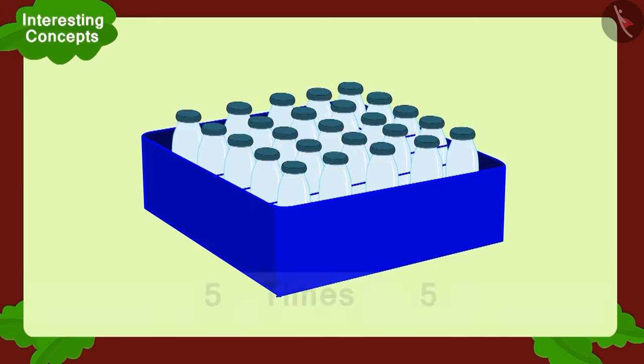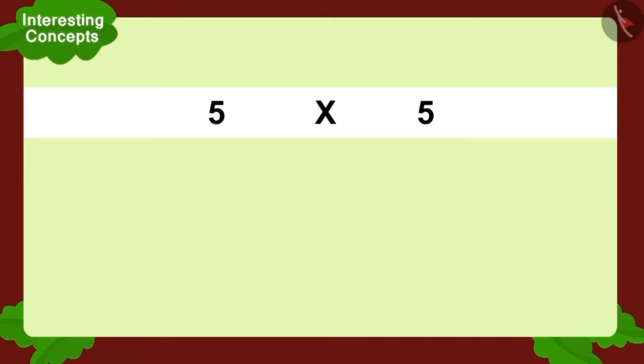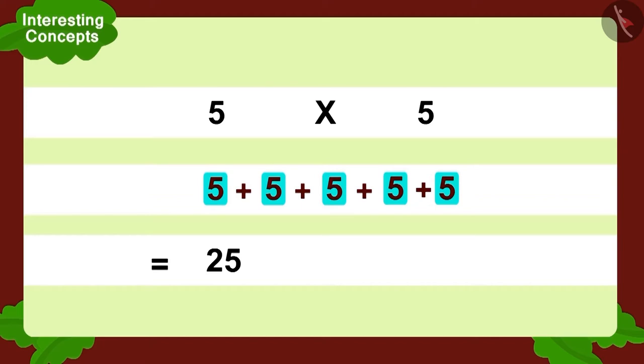Therefore, both Raju and Bablu's glasses are absolutely fine. And the multiplication shown by them were also same. Can you now find the solution to this multiplication? Absolutely right. There were a total of 25 bottles.